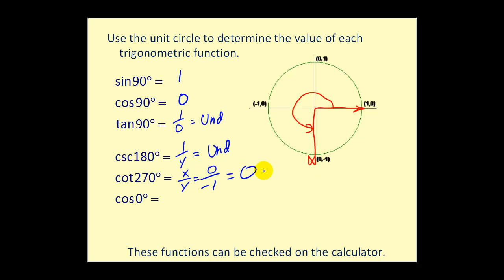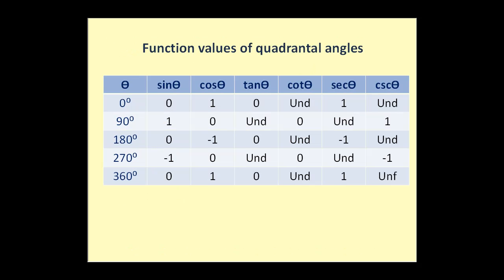For cosine 0°, the terminal side is along the positive x-axis at the point (1, 0). Cosine theta equals x, so cosine 0° equals 1. Any angle whose terminal side lies on the x- or y-axis is called a quadrantal angle. Here is a reference list of all trig function values for quadrantal angles — you may want to pause and review them.